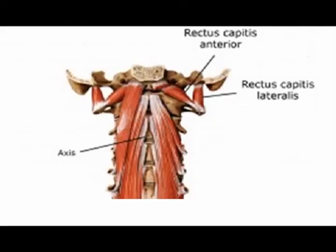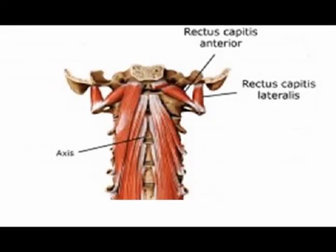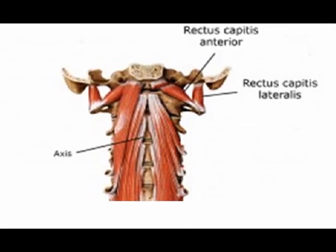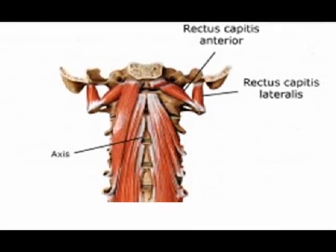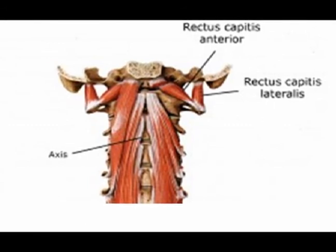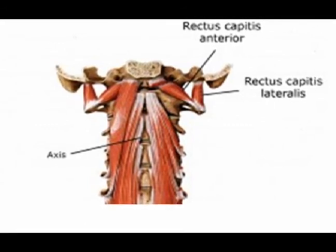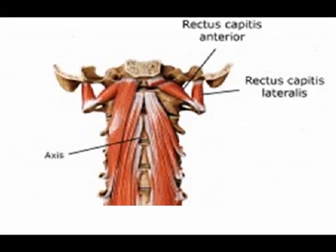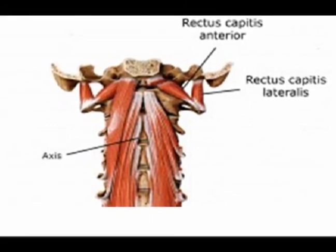The rectus capitis anterior originates on the anterior surface of the lateral mass of the atlas and the root of the transverse process. It inserts in the inferior surface of the occiput anterior to the foramen magnum. The concentric action is cervical flexion.